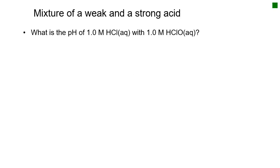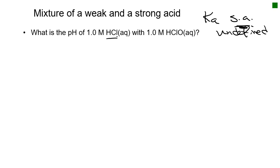To make sure we understand what's going on, we're going to mix a strong acid with a weak acid. We know HCl is a strong acid — we've memorized these. The Ka for any strong acid is undefined, because when we calculate Ka, we divide by the initial concentration of the acid, which will be zero. Strong acids go 100% to product, so Ka is so large as to be undefined.